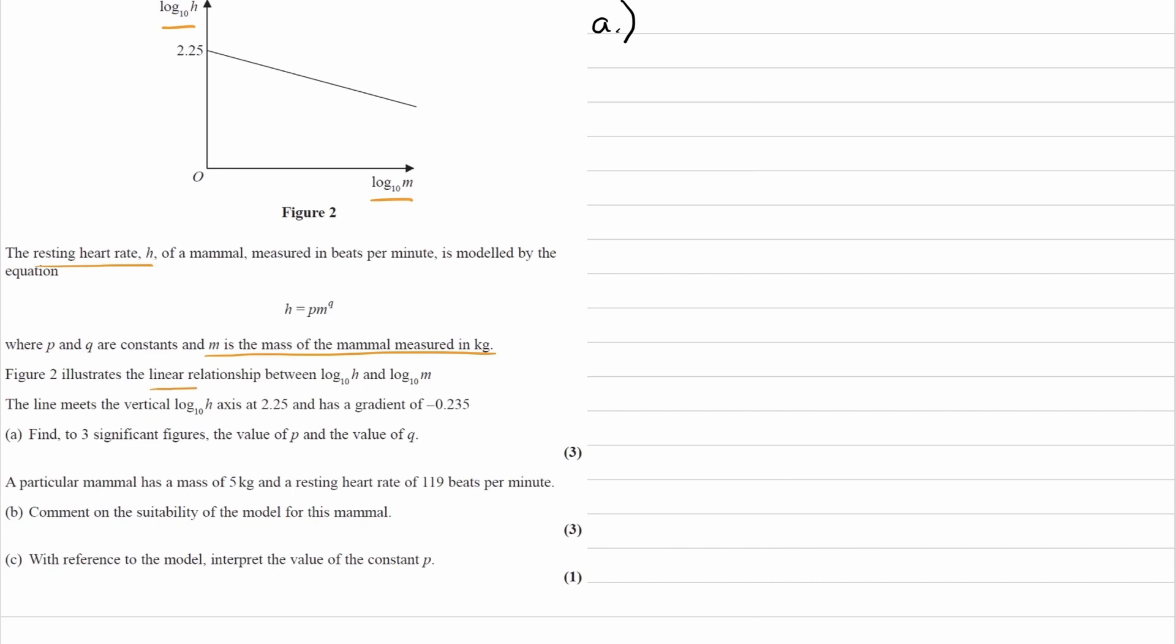We're told there's a linear relationship. We can see that from the graph. We're told the y-intercept, and we're also told the gradient. And of course, we're given the equation, h is equal to p m to the power of q. So let's actually write that down here. So h is equal to p m to the power of q.